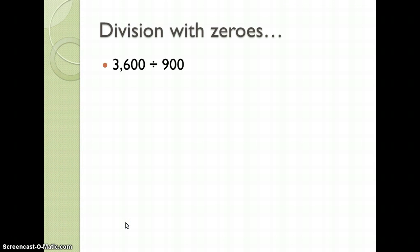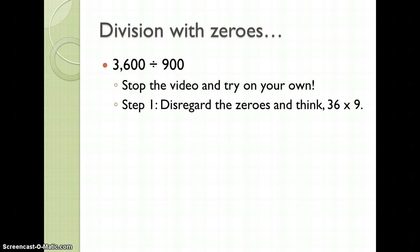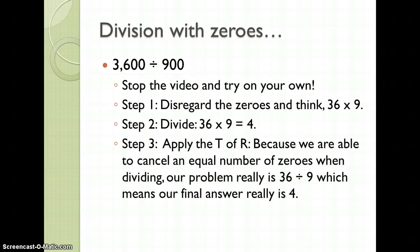3,600 divided by 900 — stop the video and try on your own. We're going to disregard the zeros and think 36 divided by 9. We're actually going to divide 36 by 9, which is 4. We're going to apply the test of reasonableness. Because we're able to cancel an equal number of zeros when dividing, our problem really is 36 divided by 9. So our final answer is the answer we found in step two, which is 4.